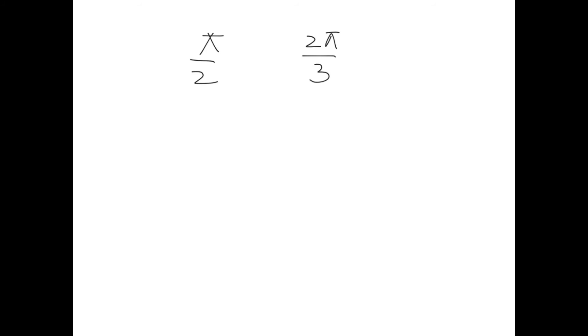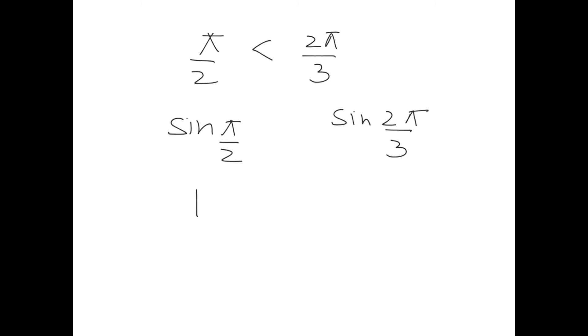But what if we start with π/2 and 2π/3? Clearly π/2 is less than 2π/3. Applying the same sine function to both sides gives sin(π/2) and sin(2π/3). sin(π/2) is 1, and sin(2π/3) is √3/2. Since 1 is more than √3/2, the inequality is reversed.